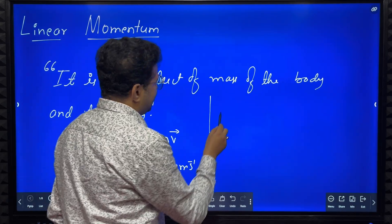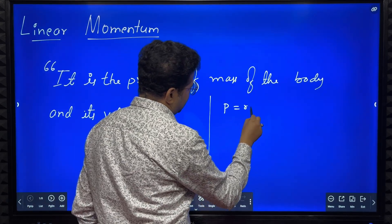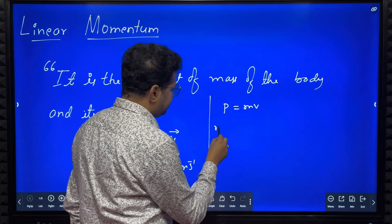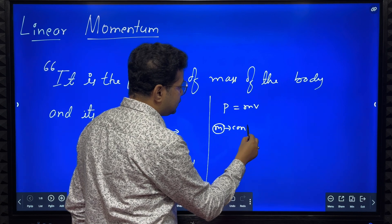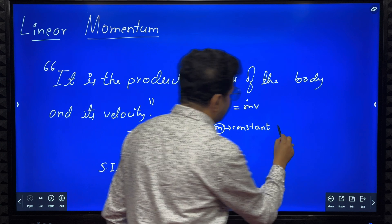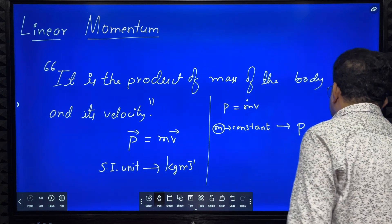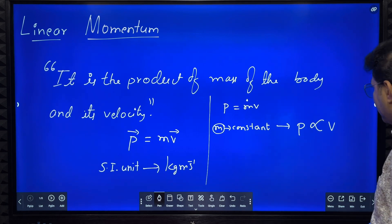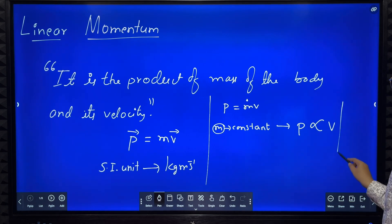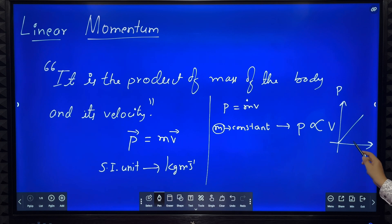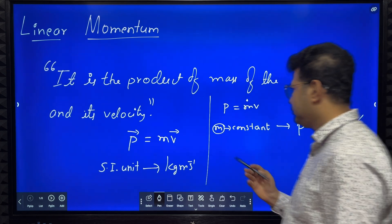Now I have this equation p equals m into v. If m is constant, then linear momentum is directly proportional to v. If you plot a graph of p versus v, you get a straight line — as velocity increases, linear momentum also increases.